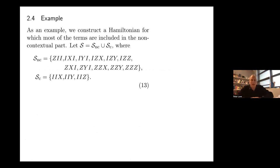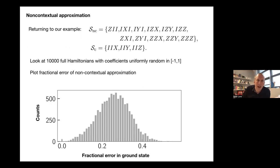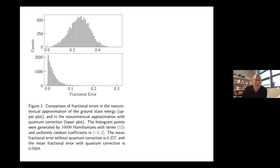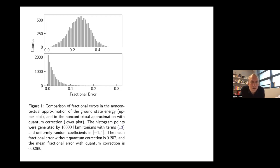Let's look back at our example. We're going to estimate just those three remaining contextual terms and see what impact that has on accuracy for our 10,000 examples. Just to remember, this is our slightly sad plot of 30% average error for this random set of Hamiltonians. After applying the contextual correction, all the fractional errors are less than 10%, and we have a nice bias towards much lower fractional error. So we're doing much better with this correction even in the simple example, which is reassuring.